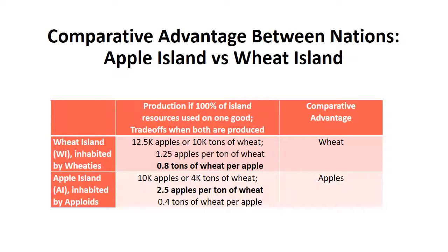In this video, I want to go over the material about comparative advantage and trade from chapter 18 of the economy. Comparative advantage talks about the relative advantages in production of two different countries. In the example we have been following, we have two countries called Apple Island and Wheat Island. Wheat Island is inhabited by Wheaties and Apple Island is inhabited by Apploids.